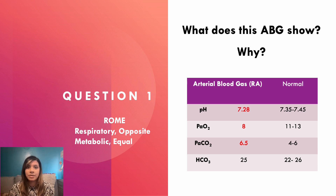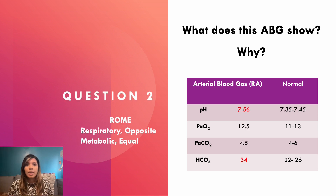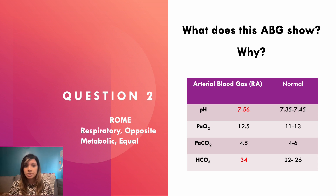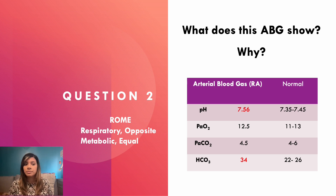For the next ABG example: the pH has risen, so this patient is alkalotic. PO2 is normal, which is good. PCO2 is also normal. But the bicarbonate has risen — the pH and bicarb have moved in the same (equal) direction, so this is a metabolic alkalosis. Causes include vomiting and diuretics.